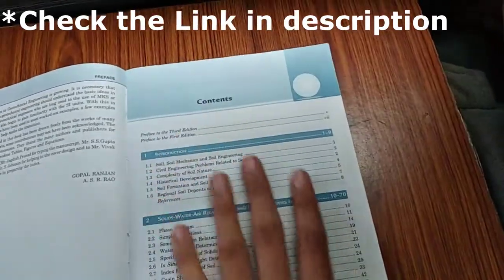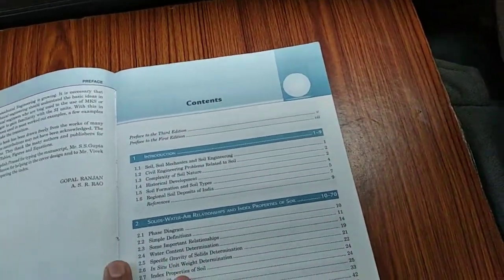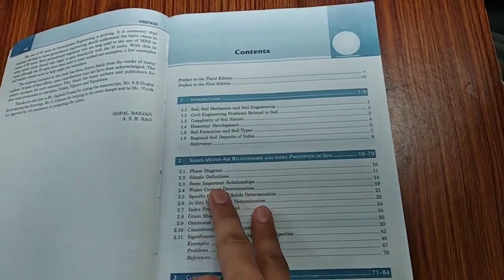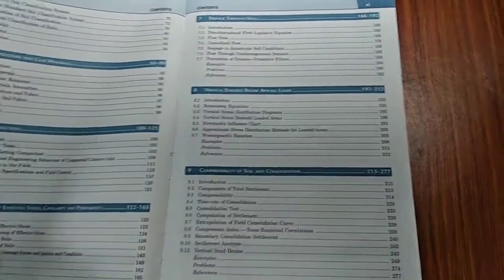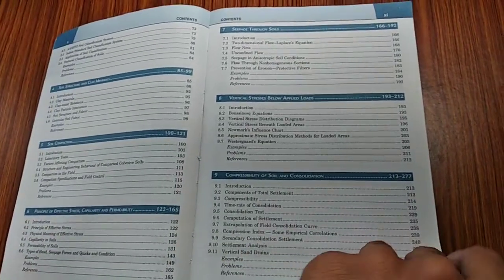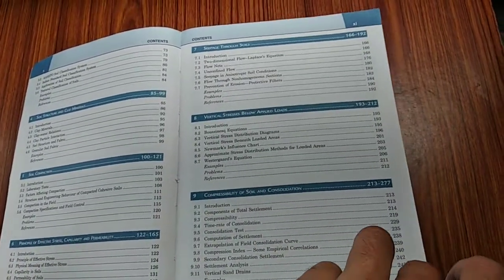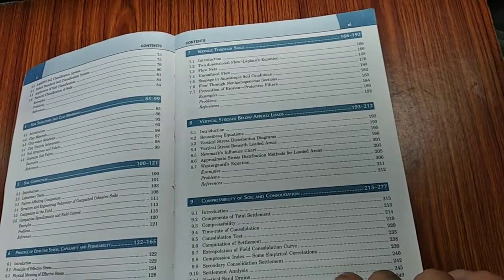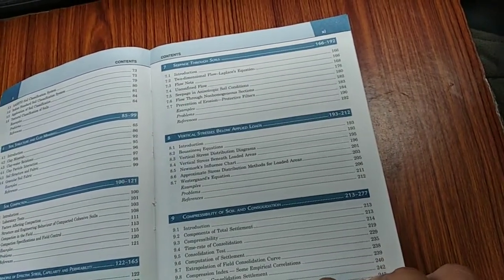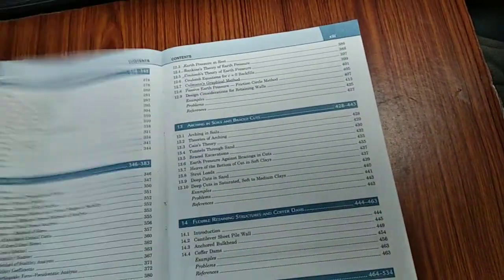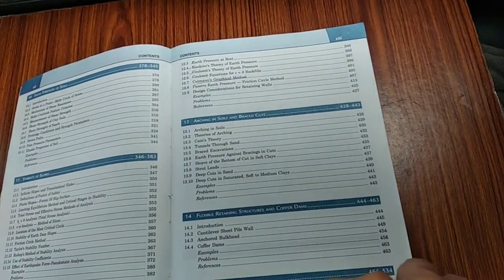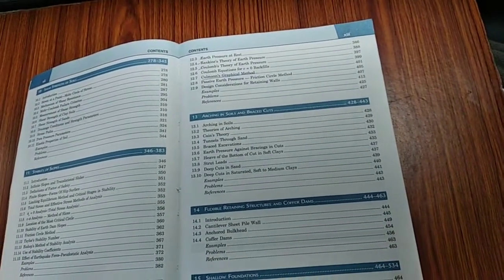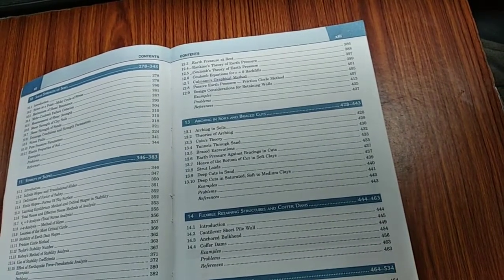Coming to the contents of this book, it covers everything. It starts from the basics of soil mechanics, then the classification of soil, soil structure and clay minerals, soil compaction, principal stresses, effective stresses, permeability, seepage, vertical stress, compressibility of soil, consolidation, stability of slopes, shear strength of soils, earth pressures and retaining walls, shallow foundations, and deep foundations.